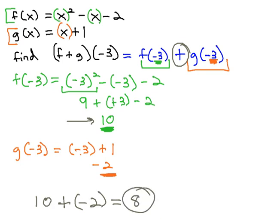This is our final solution for (f + g)(-3). We plug -3 into both f and g functions, then add the results together.